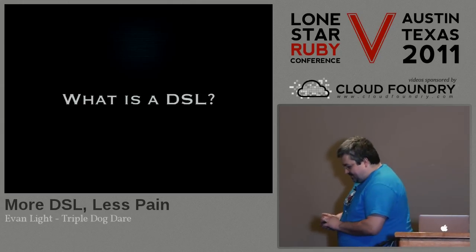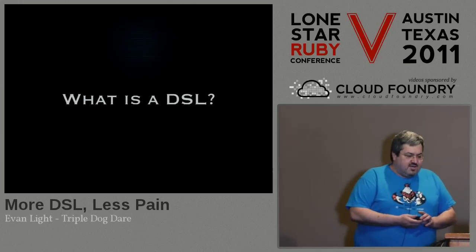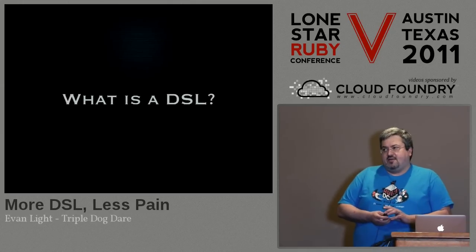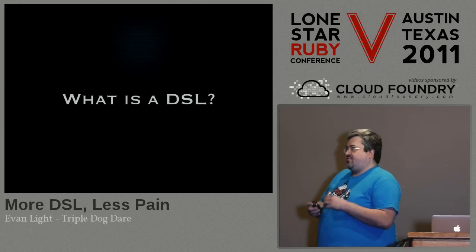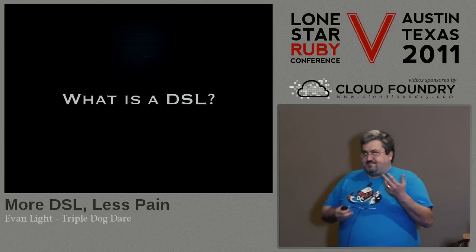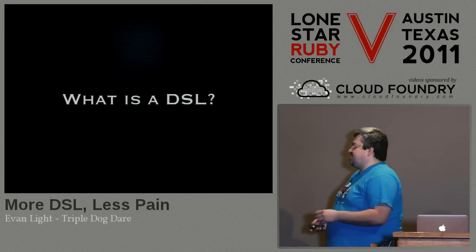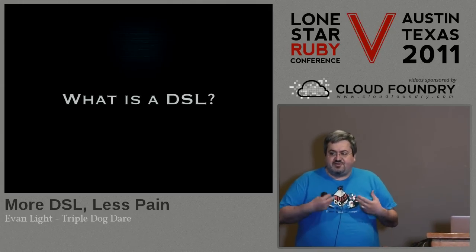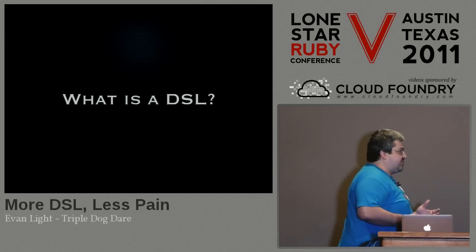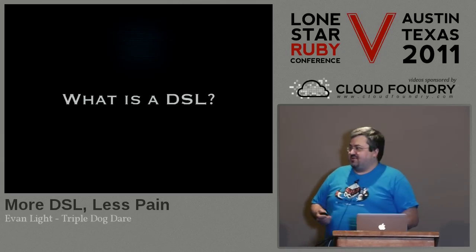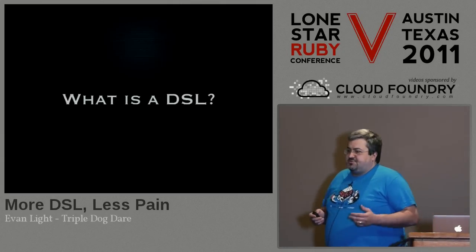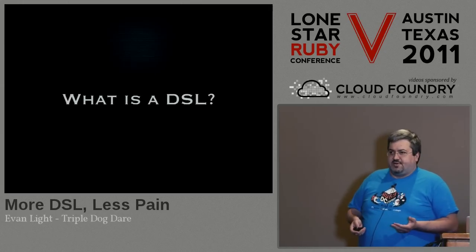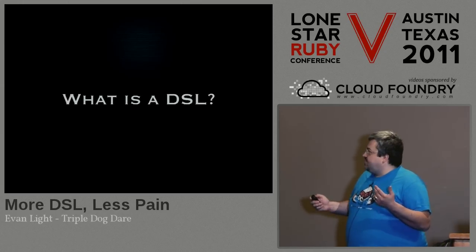So what is a DSL? A DSL — domain-specific language — is a fancy way of saying an API that tries to eschew ceremony. It tries to eschew ceremony and tries to elevate the content of what it is you're trying to say. It's trying to expose intent, as opposed to non-DSL libraries, which can often get caught up in noise and don't necessarily read quite as clearly.